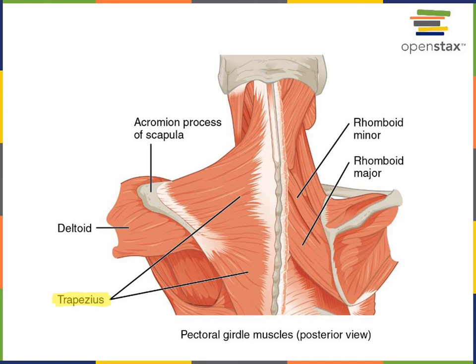Deep to the trapezius, here we can see the rhomboid muscles. Rhomboid minor is a little smaller and more superior than the rhomboid major, but both rhomboid muscles have the action of retracting the scapula and drawing it towards the midline.